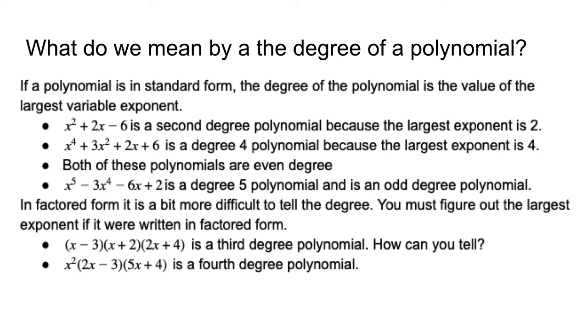What do we mean by the degree of a polynomial? You can find the degree of a polynomial that's written in standard form by looking for the largest variable exponent. In the first bullet you can see that it starts with an x squared and that squared term is the largest exponent, therefore it's a second degree polynomial.